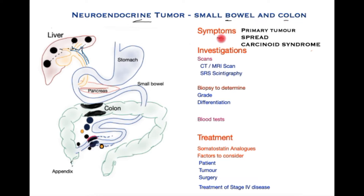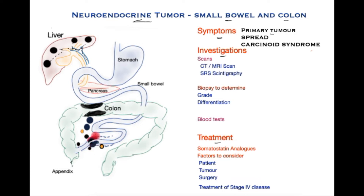We shall assess the symptoms, the tests required, and the treatment. First, the symptoms. Symptoms may be from the primary tumor itself. Looking at this cartoon, you can see the stomach, the small bowel which is connected to the colon, and here in black you see a neuroendocrine tumor which is slowly constricting the small bowel, making it more and more difficult for content to pass through, giving rise to colicky abdominal pain and vomiting over a course of time.